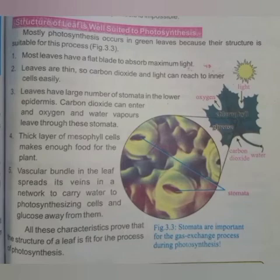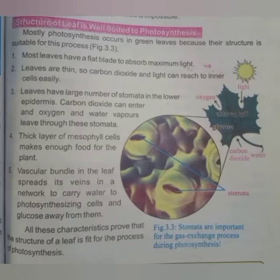Point number two: leaves are thin — پتلے ہوتے ہیں — so carbon dioxide and light can reach the inner cells easily. That is why carbon dioxide and light can reach the inner cells. Leaves پتلے ہوتے ہیں جس کی وجہ سے carbon dioxide اور light ان کے اندر easily absorb ہو جاتی ہے اور internal cells تک پہنچ جاتی ہے۔ That is due to the thinness of leaves.